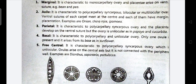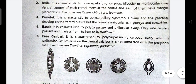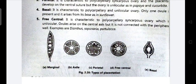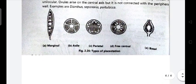Next is basal placentation — it is characteristic of polycarpellary unilocular ovary. Only one ovule is present and it arises from the base. Example: sunflower. Next is free-central placentation — it is characteristic of polycarpellary syncarpous unilocular ovary. The ovules are present on the central axis but are not connected with the peripheral wall. Examples: Dianthus, Saponaria, and Portulaca.